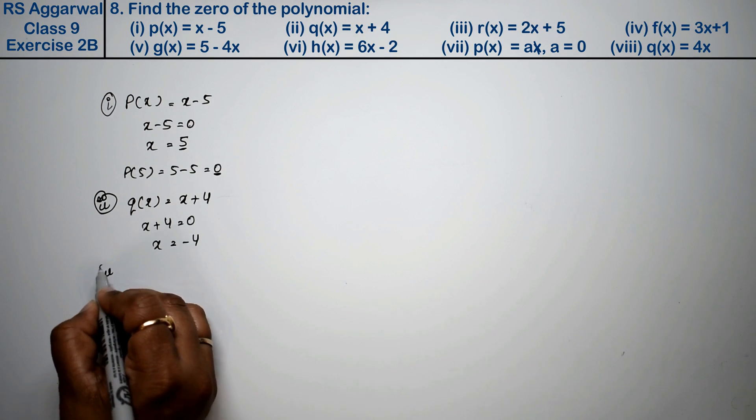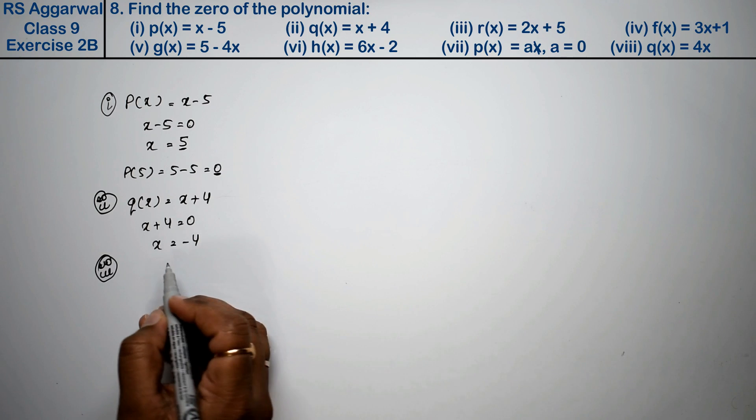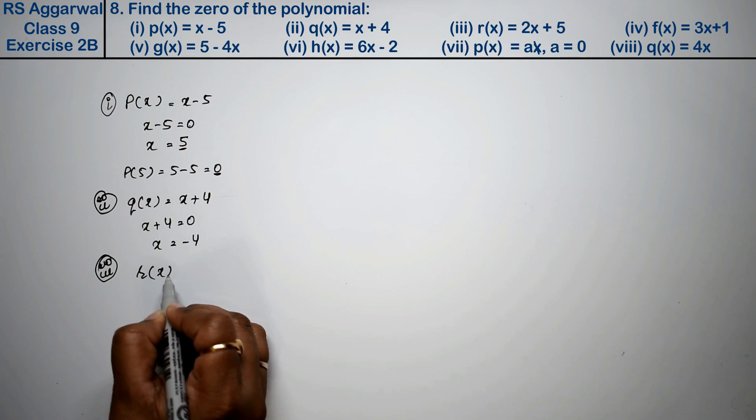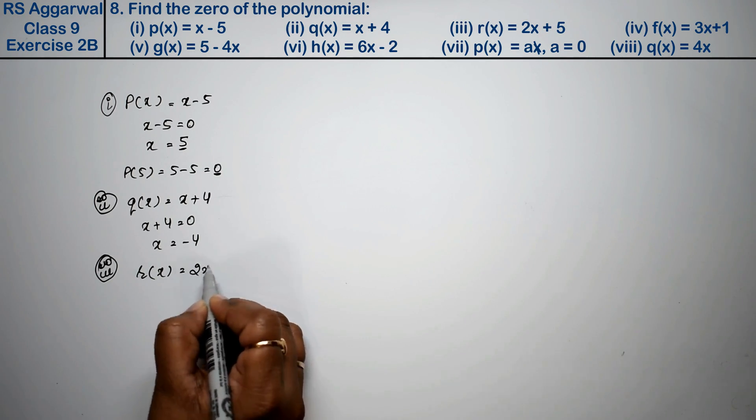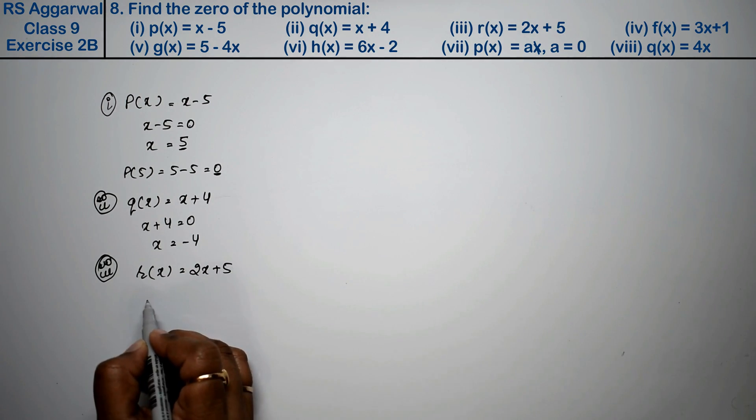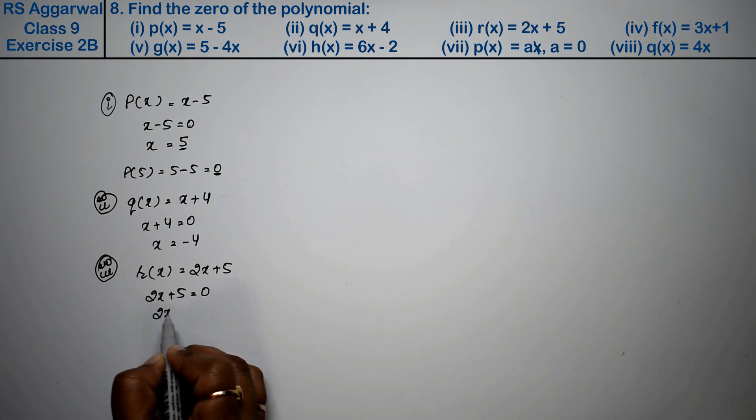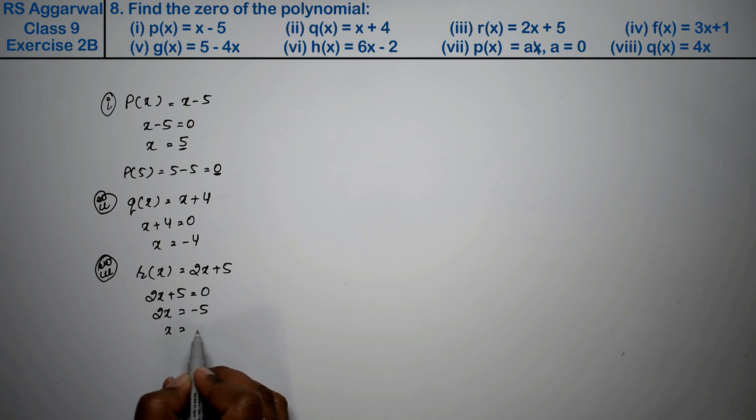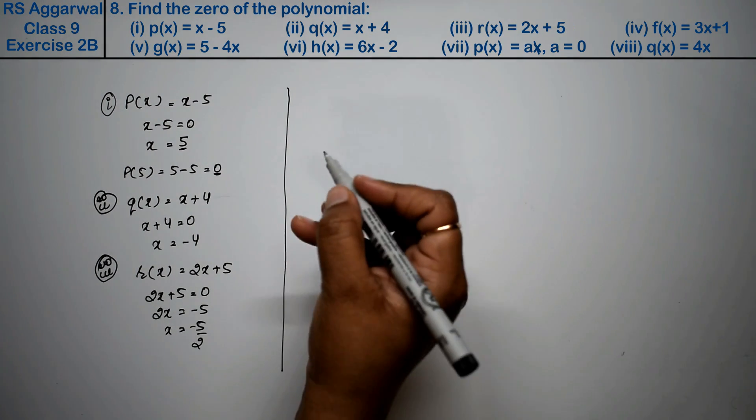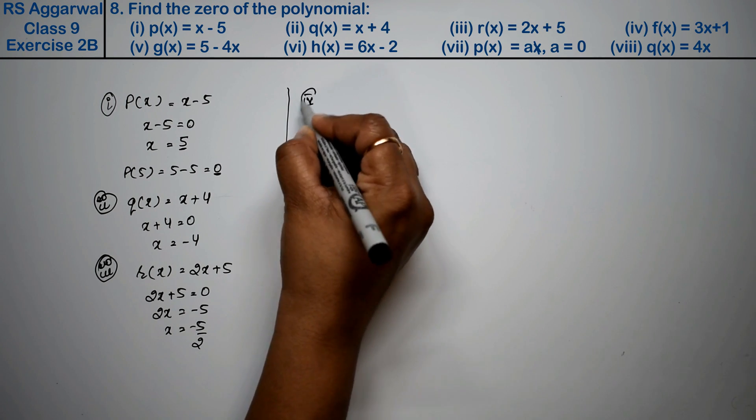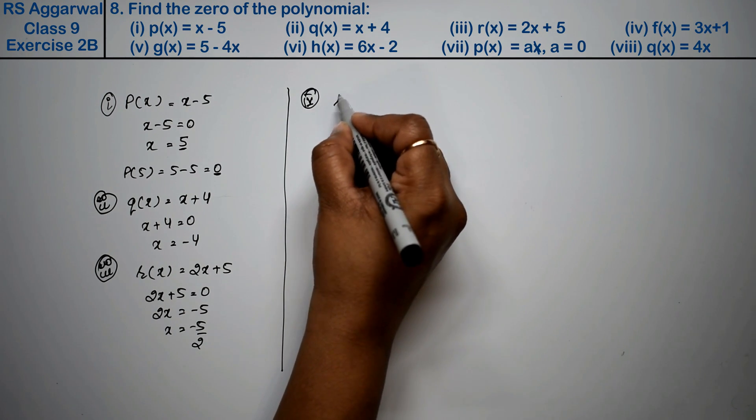Third part: r(x) equals 2x plus 5. Setting 2x plus 5 equal to 0, this moves to the other side and becomes minus. x was in multiplication, so it comes down in division. The value of x is minus 5 upon 2. Fourth part is f(x) equals 3x plus 1.